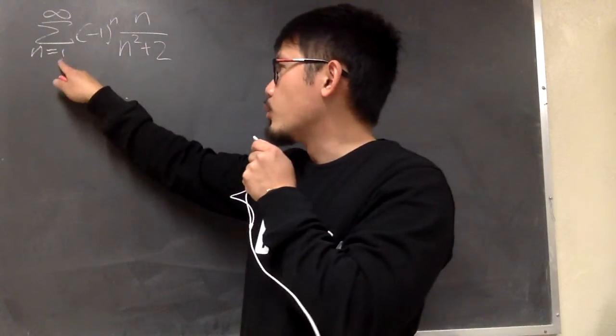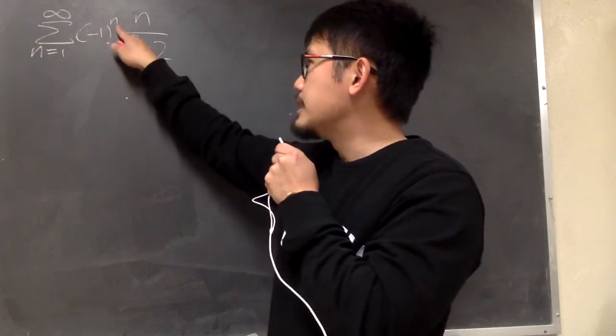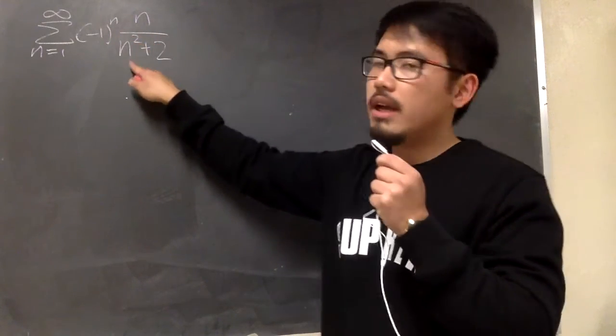Converge or diverge: sigma as n goes from 1 to infinity, parentheses negative 1 to the nth power, times n, over n squared plus 2.